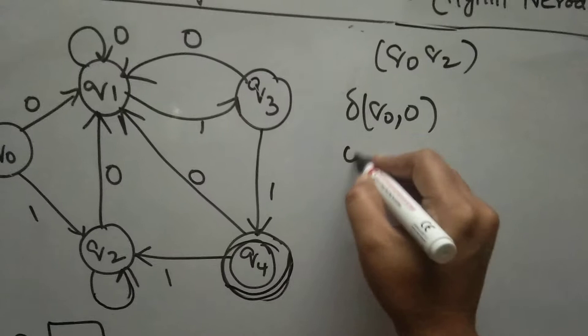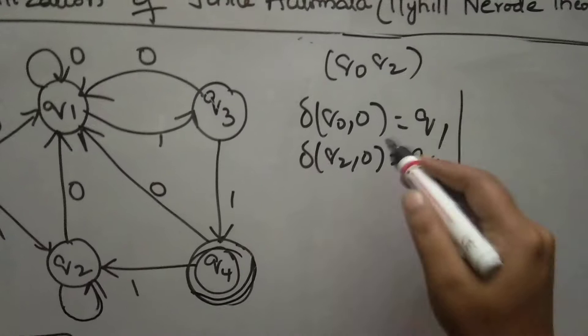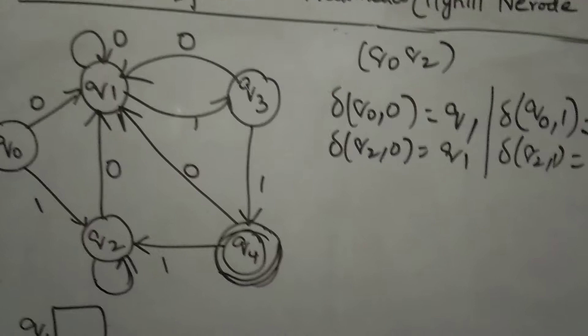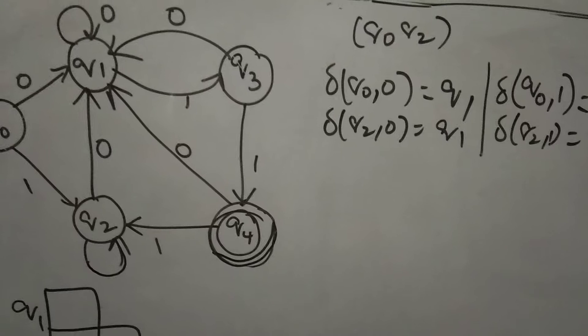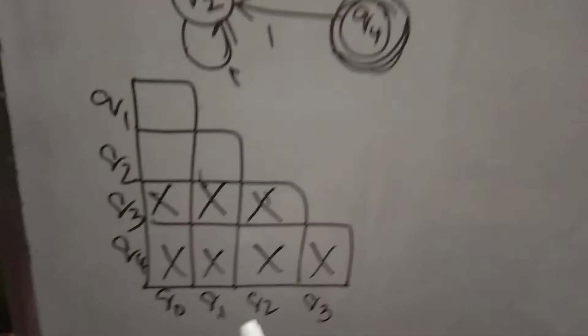Next, we go for Q0, Q2. Delta of Q0 upon 0, delta of Q2 upon 0. Q0 upon 0, where we are moving? Q1. Next, Q2 upon 0 is Q1. Q1, Q1 is not marked. Go for Q0 upon 1, Q2 upon 1. Q0 upon 1 is Q2. Q2 upon 1 is Q2. Q2, Q2 - same - so Q0, Q2 we cannot mark.